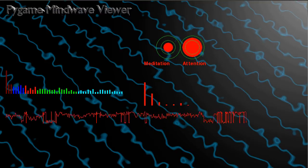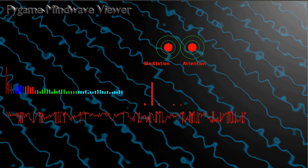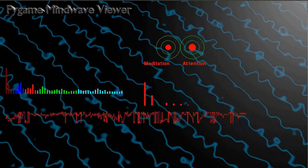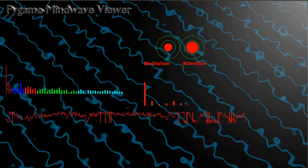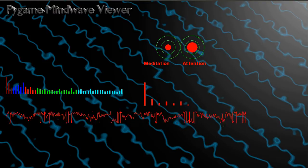On the top right we can see meditation and attention levels. These are computed by the MindWave itself. The headset has some way of figuring these out.